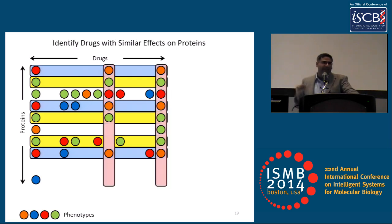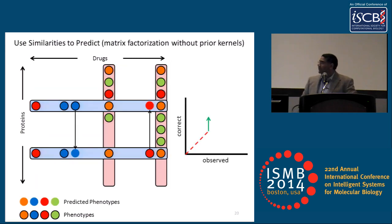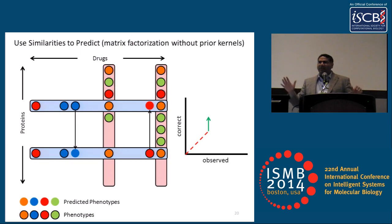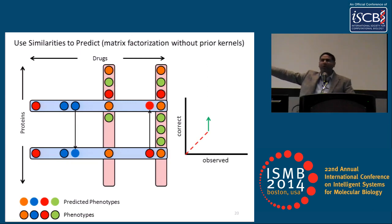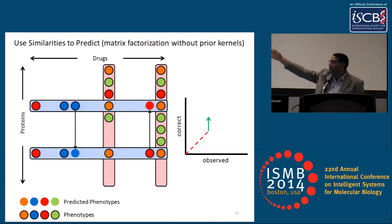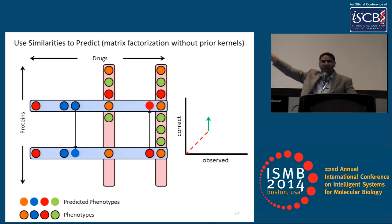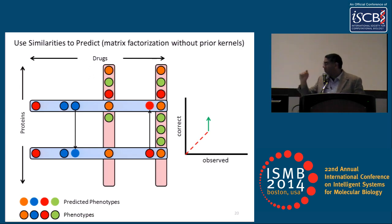We can do exactly the same thing for drugs. What this gives us is a factorization of essentially this matrix without relying on any sort of prior knowledge, without relying on the ability to compare among the drugs or proteins. We're doing that through the data we've observed.